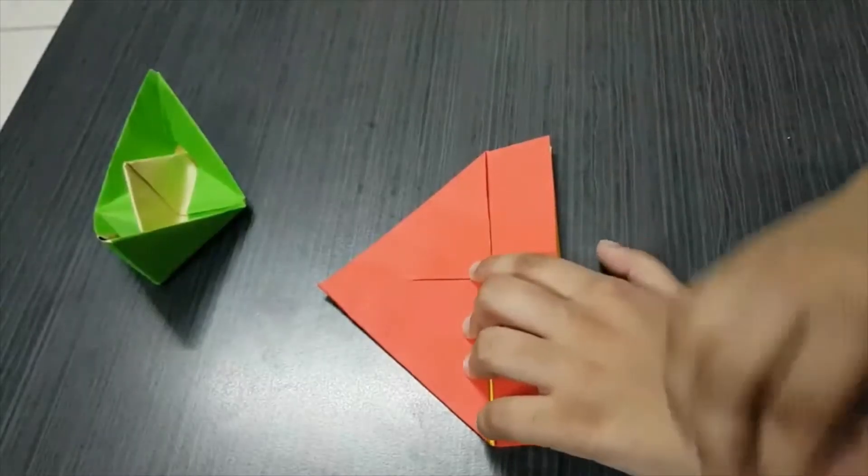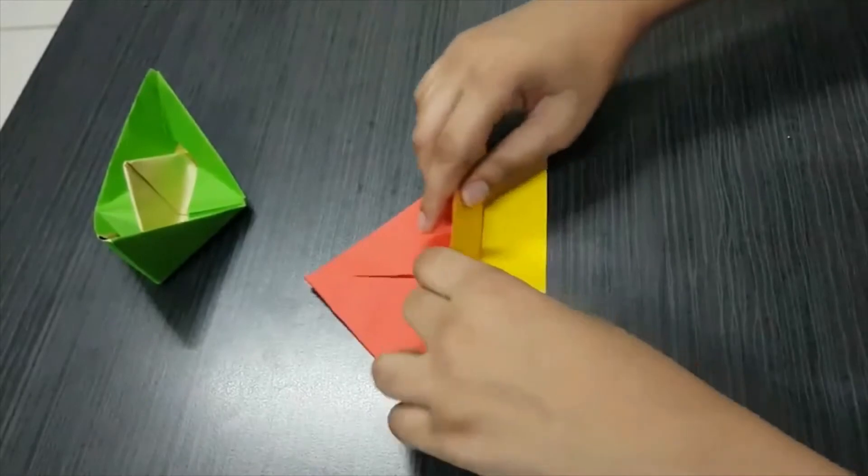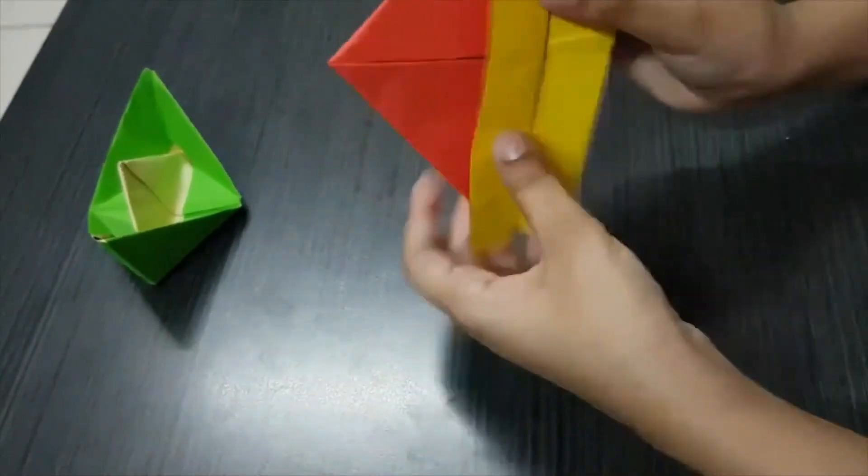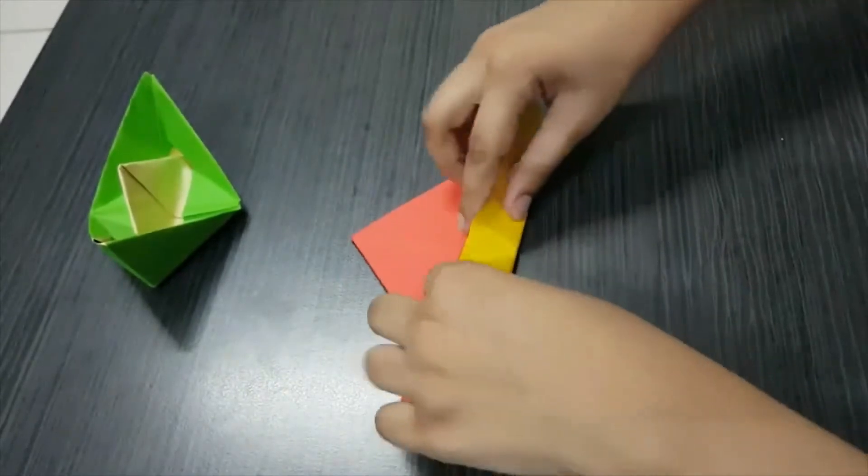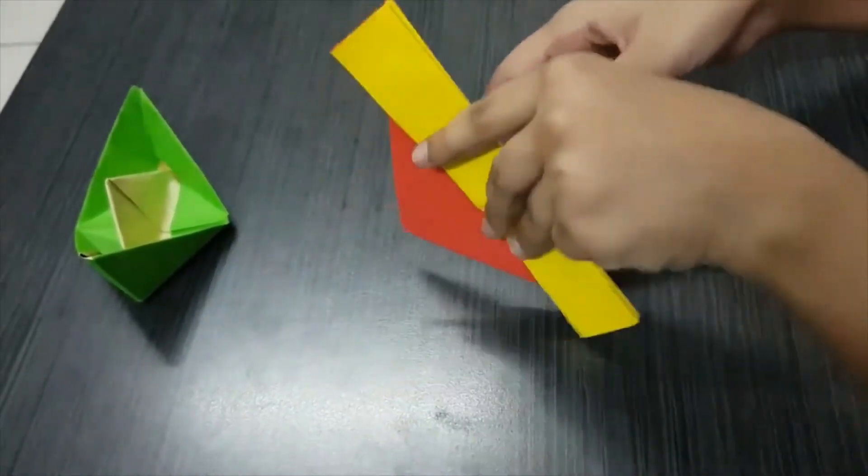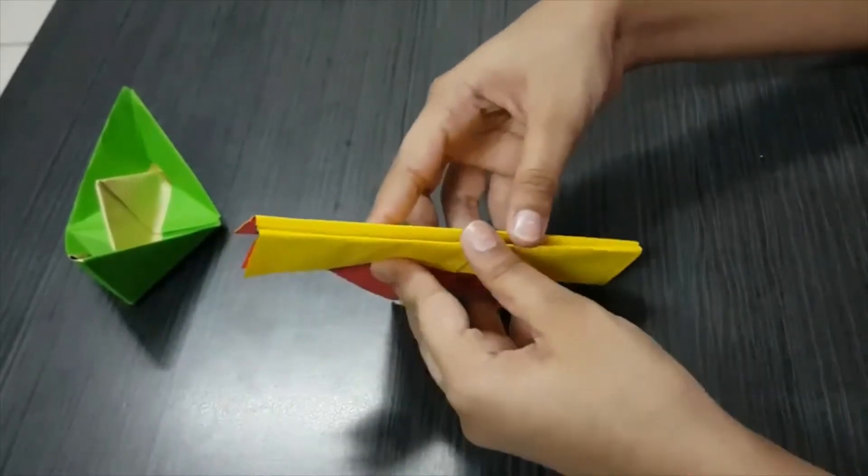The next thing you need to do is to take this layer and fold it upwards like this. And then flip it over and do the same thing from the other side, just like that.